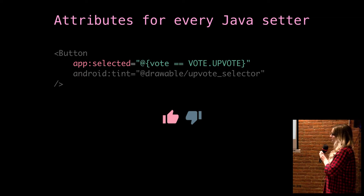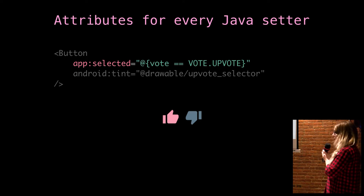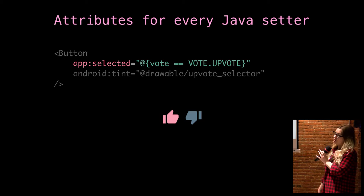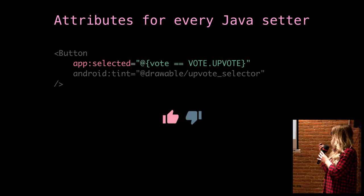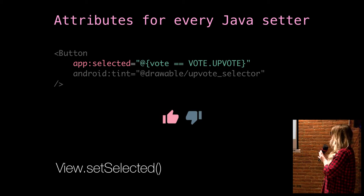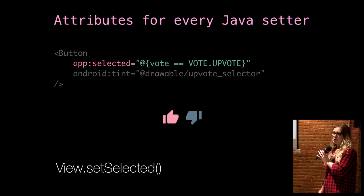Now, there are some Java setters that do not have any XML attributes. Well, data binding creates them. So in this case, I know that I have upvoted Tinkerbell because she's lovely. However, there's no Android:selected attribute, but I'm making one. In this case, app is just a namespace I made up. And I can say if my vote is equal to an upvote, set it selected. Data binding looks for something on view called setSelected, finds it because there's this Java setter. And this just works.